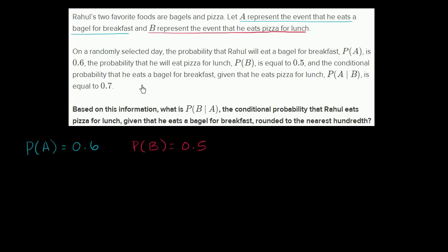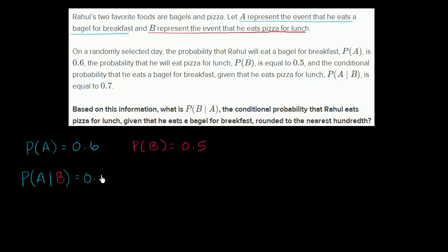And the conditional probability that he eats a bagel for breakfast, given that he eats a pizza for lunch — probability of event A happening given that he's had pizza for lunch — is equal to 0.7, which is interesting. So the probability of A given B is not 0.6, it's equal to 0.7.